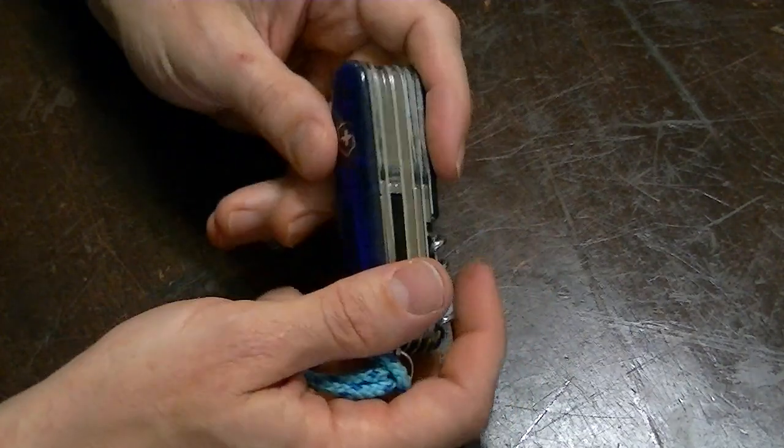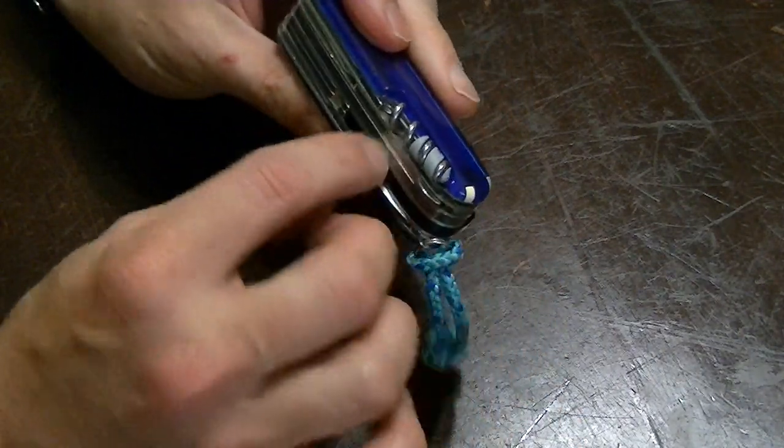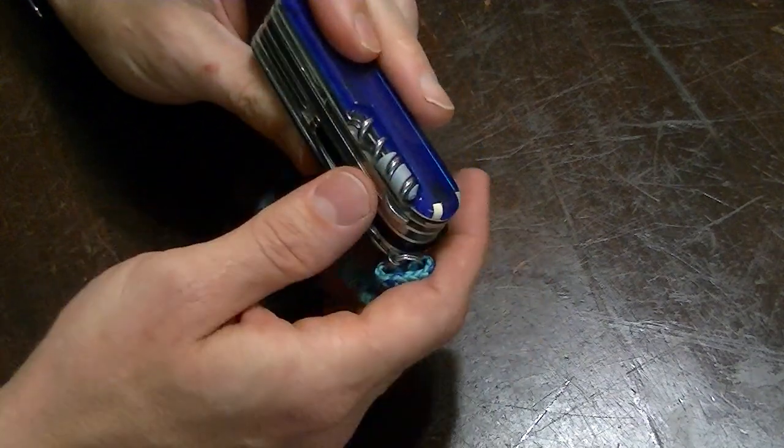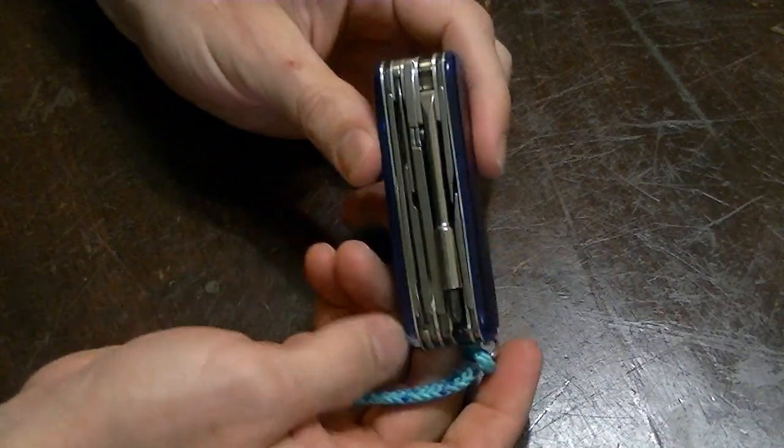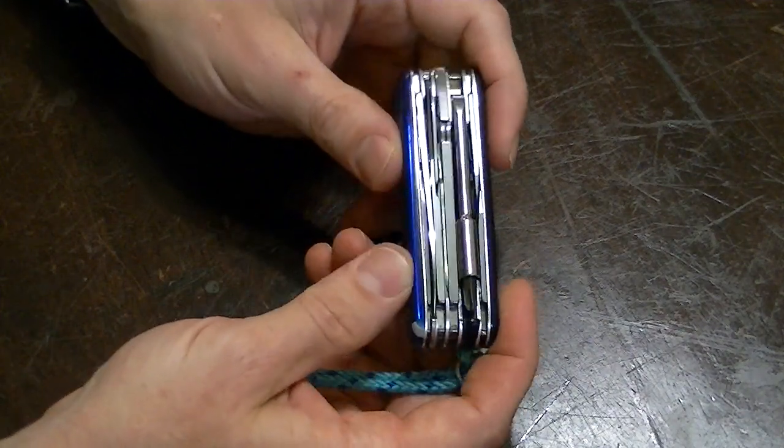It's got the plus scales, just like I talked about on the Explorer. So, you've got the ballpoint pen, the toothpick, and the tweezers. And then the pin next to the corkscrew there. So, Cybertool M, or Cybertool 34, if it's an older one.